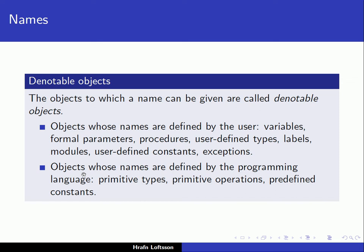On the other side, we have objects whose names are defined by the programming language itself — names we do not give, as they are part of the language. These include primitive types such as int, bool, and double in C++, some primitive operations already defined like plus, minus, and multiplication, and predefined constants such as null in C++, which is defined in a header file that comes with the compiler.